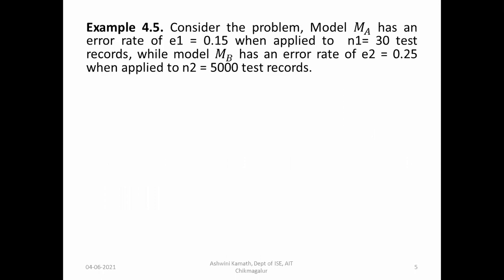Consider the example discussed in the previous class. Model MA has an error rate E1 = 0.15 when applied to N1 = 30 records, and model MB has an error rate E2 = 0.25 when applied to N2 = 5000 records. MA and MB are two models with respective error rates 0.15 and 0.25.